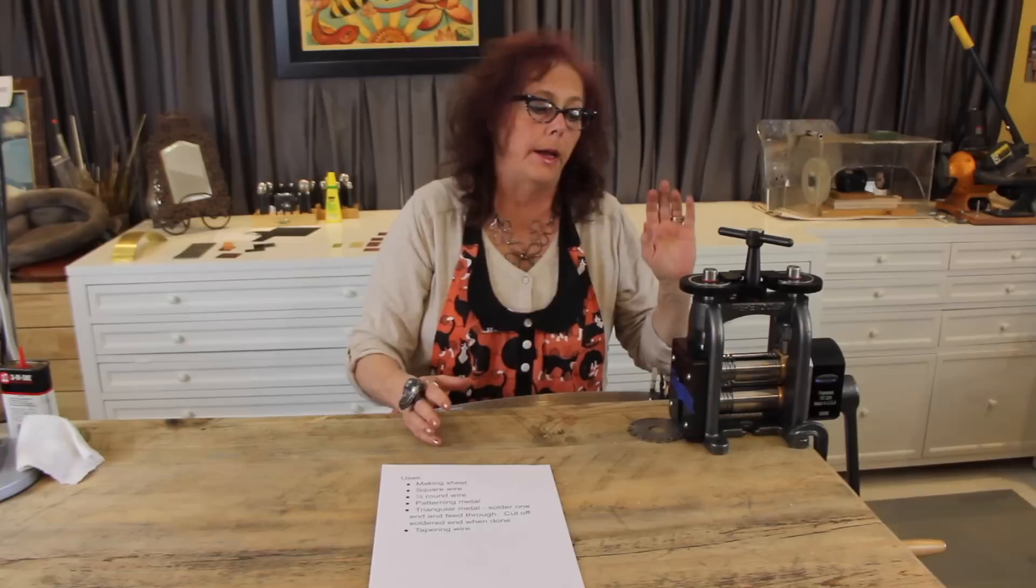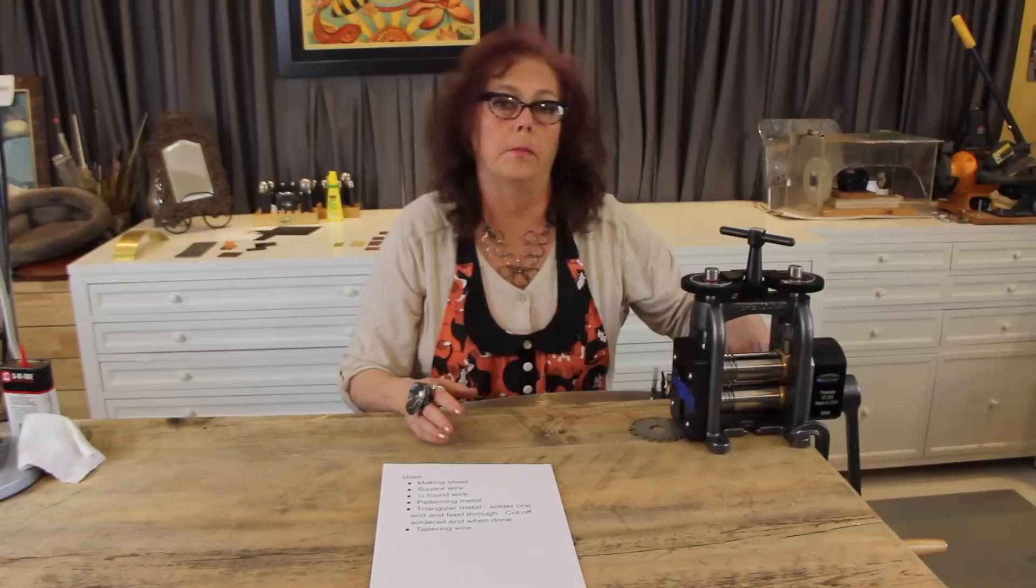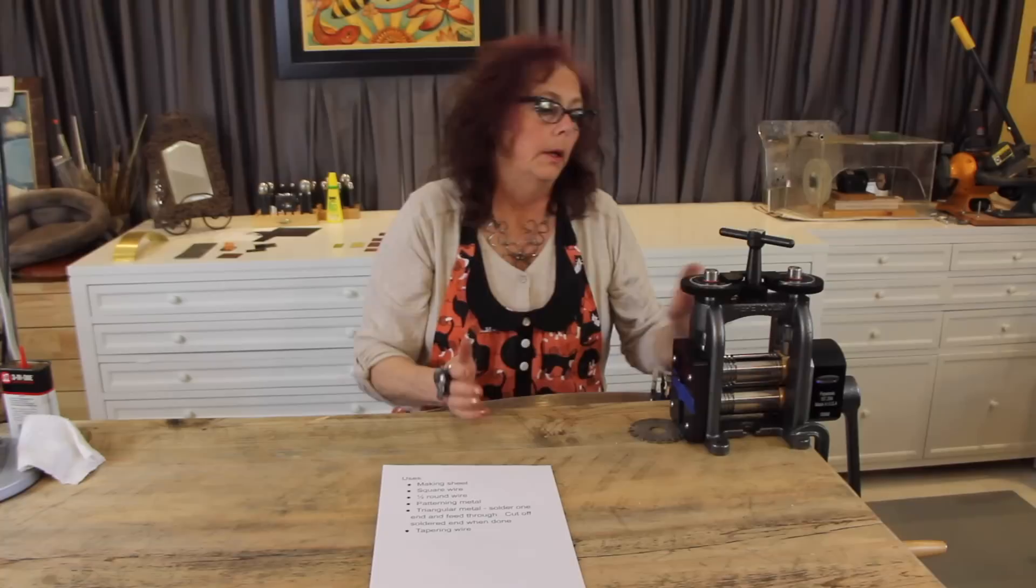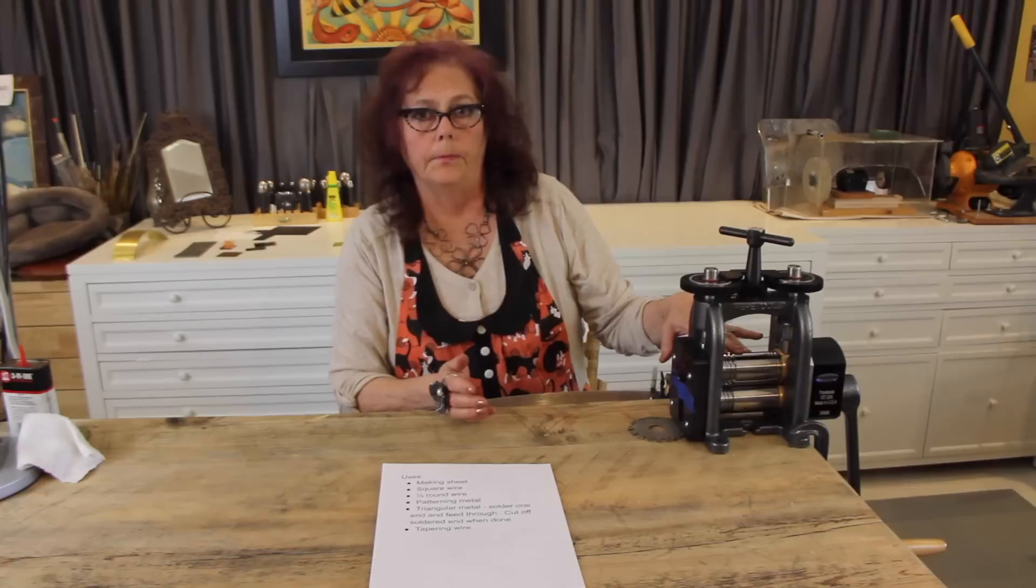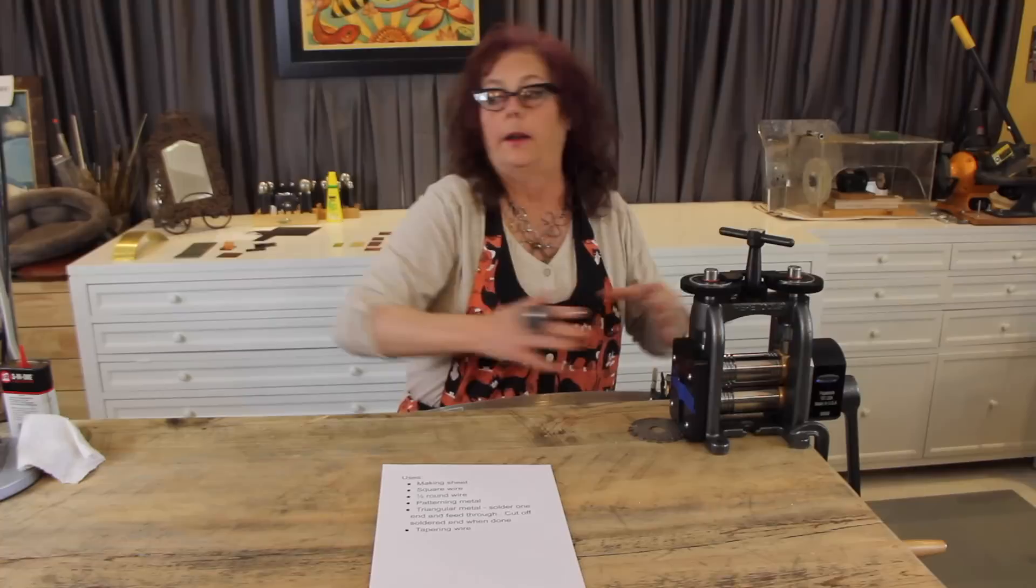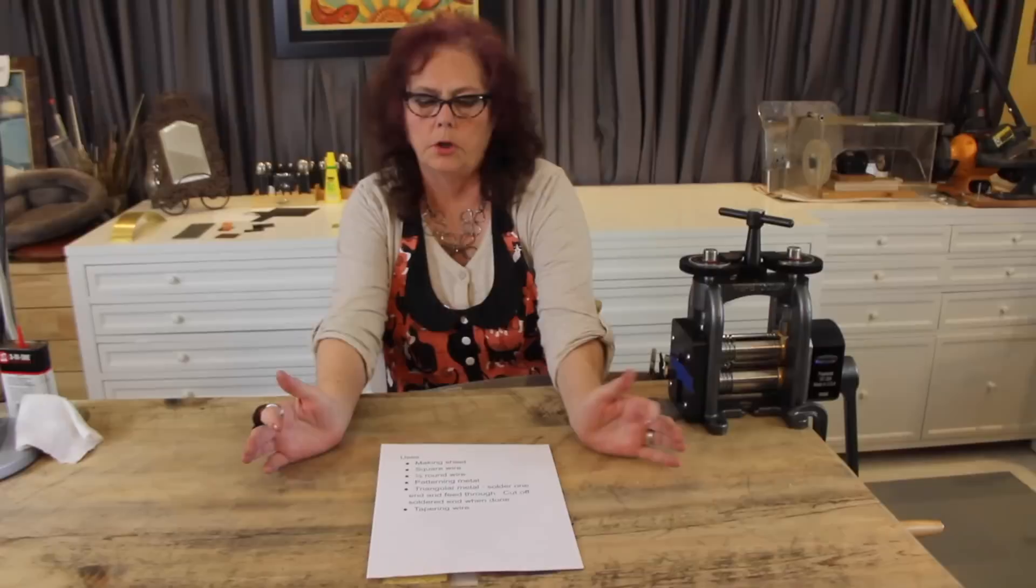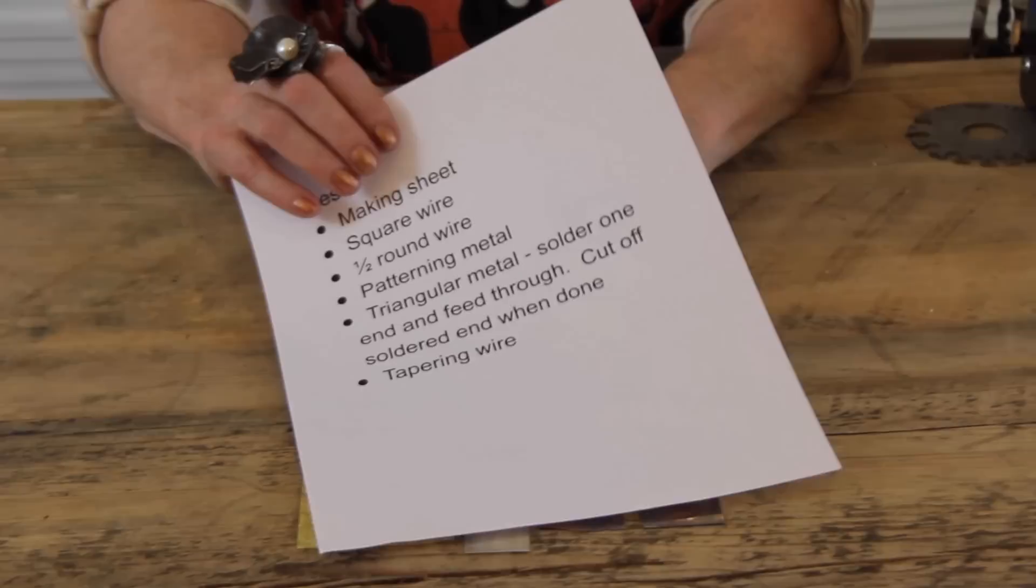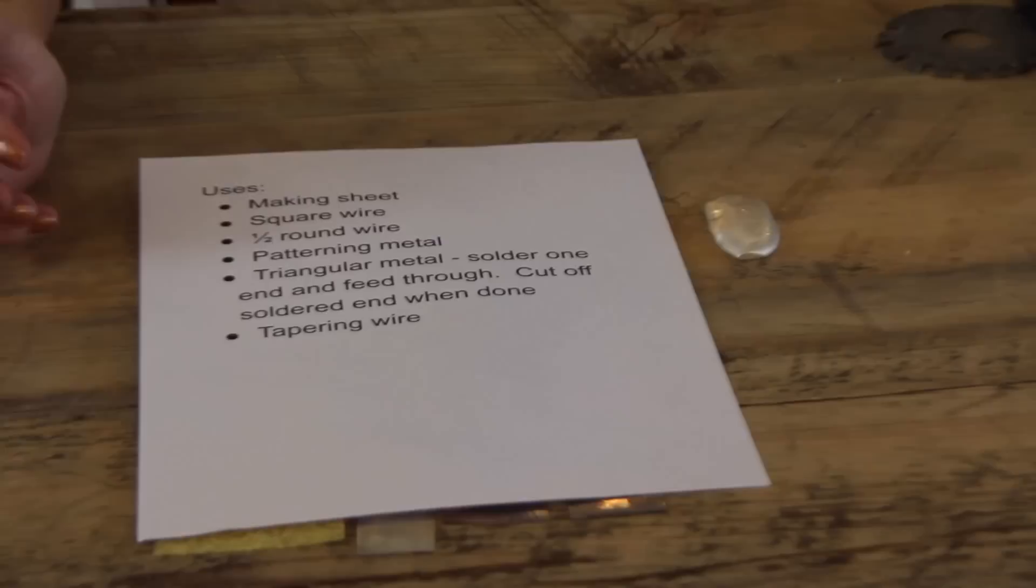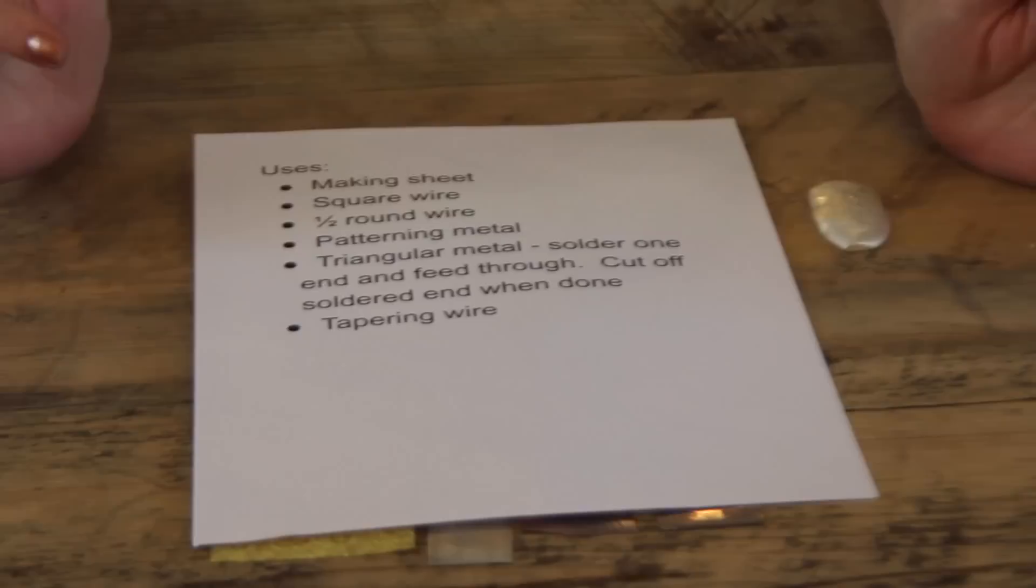Uses for this, and this particular one, the combination rolling mill, what that means is that you've got a flat area and you have these grooved areas. The one that has a groove on the top and it's flat on the bottom is used for making half round wire. The other side, where the grooves are on the top and the bottom, is used for making square wire. There's various gauges or you can start thick and bring it all the way down. You can take round wire, triangular wire, and turn it into square wire.